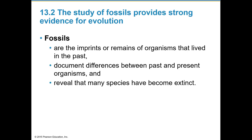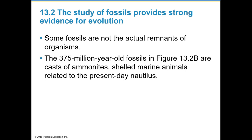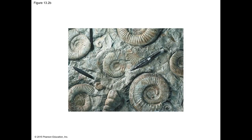Fossils are the imprints or remains of organisms that lived in the past. They document differences between past and present organisms and reveal that many species have become extinct. Some fossils are casts rather than actual remains — for example, 375-million-year-old casts of ammonites, shelled marine animals related to the present-day nautilus, a marine mollusk.